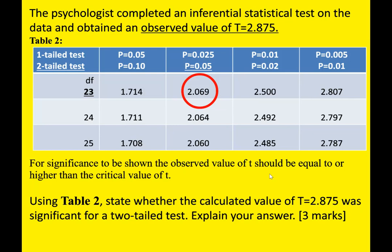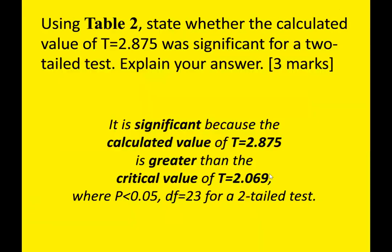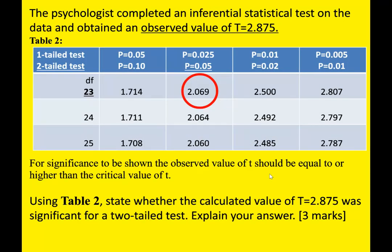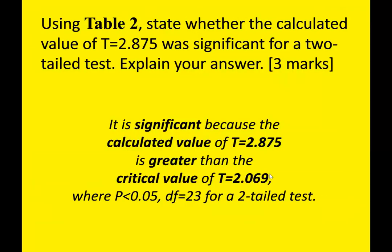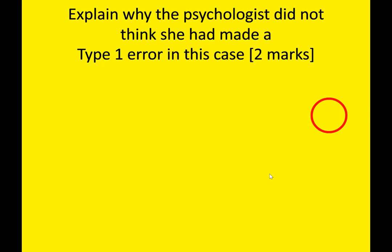Remember, under the table it says for significance to be shown the observed value of t should be equal to or higher than the critical value. Our observed value is 2.875, which is higher than the critical value of 2.069. So the answer to this question is: 'It is significant because the calculated value of t = 2.875 is greater than the critical value of t = 2.069, p < 0.05, df = 23, for a two-tailed test.' All that information comes from the table.